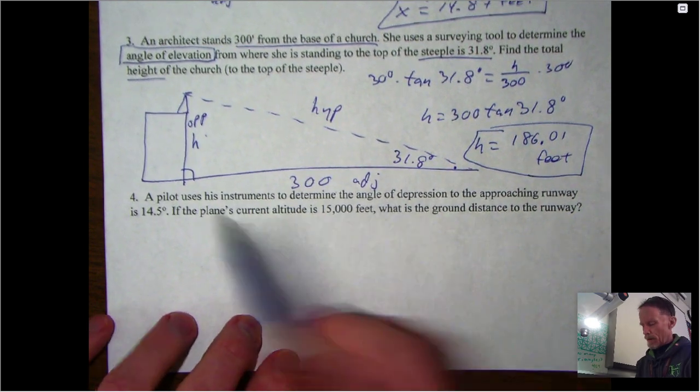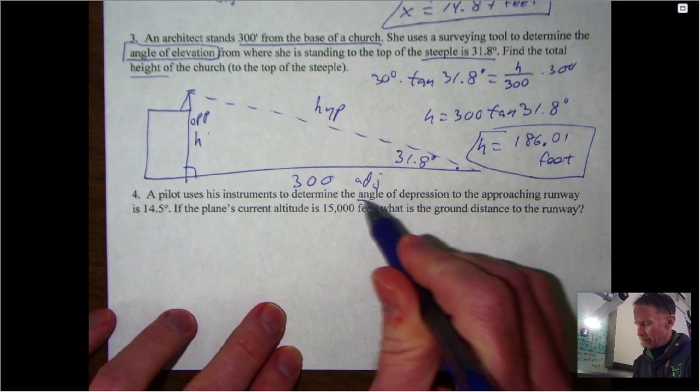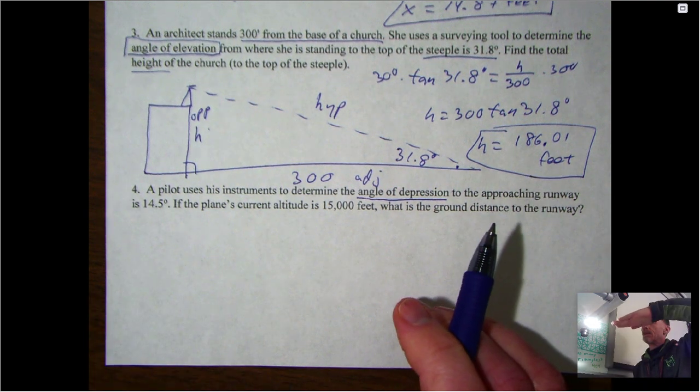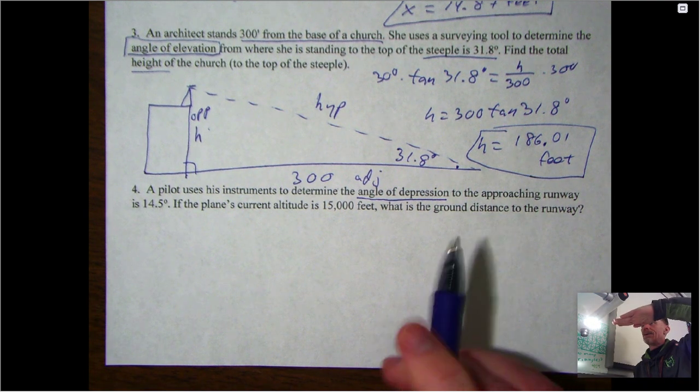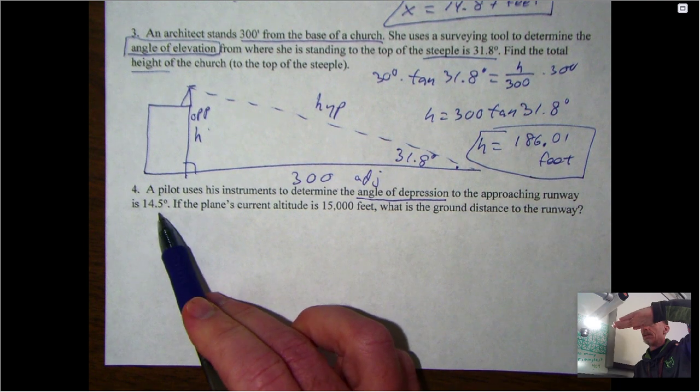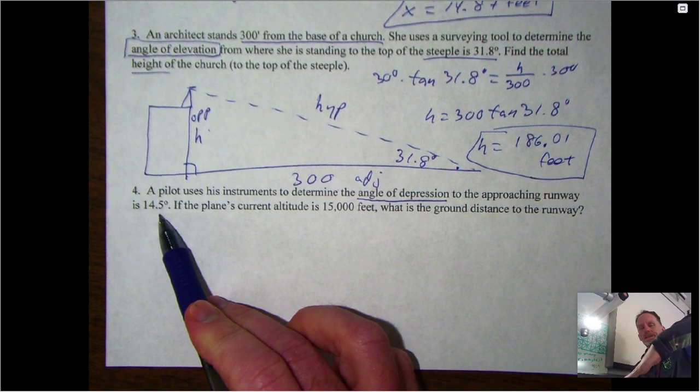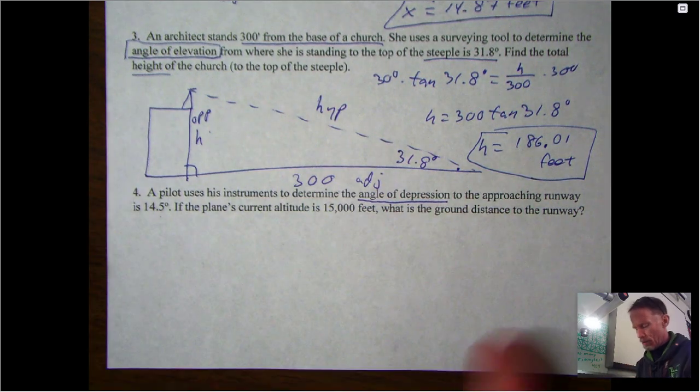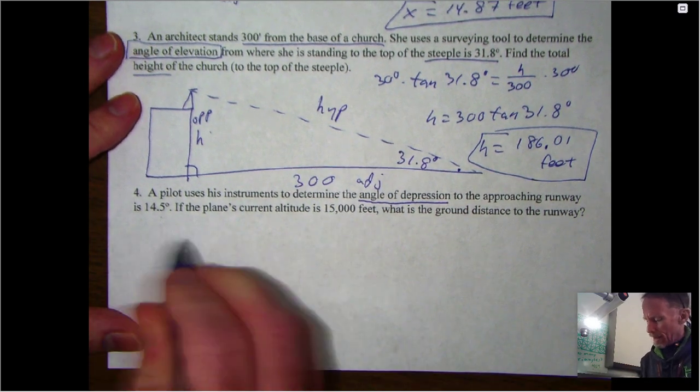And the last one, similar kind of question but now we have an angle of depression. Now if you have an angle of depression, what that means is from the horizontal that angle - in this case 14.5 degrees - is being measured downward from the horizontal. So again, draw the picture and you'll kind of see what happens.